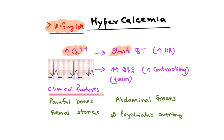Coming to hypercalcemia: levels greater than 10.5 mg/dL. Here also, QT interval is inversely proportional to electrolyte levels, so as calcium goes up, QT interval shortens — a short QT interval is seen. Also, as calcium levels increase in cardiac cells, heart rate and contractility go up, so QRS amplitude will increase — tall QRS waves are seen. The clinical features follow the mnemonic: painful bones and renal stones, abdominal groans and psychiatric overtones. With these features and ECG findings, you can identify a hypercalcemic patient.